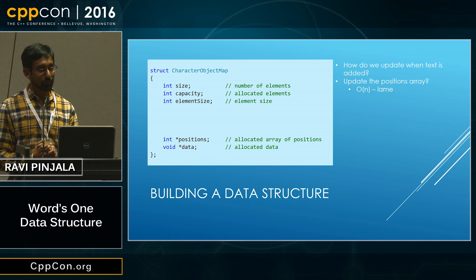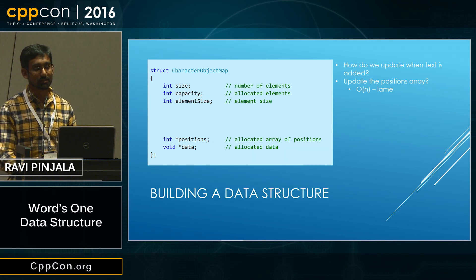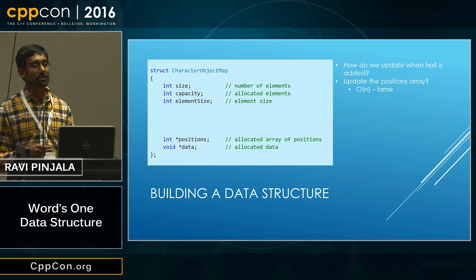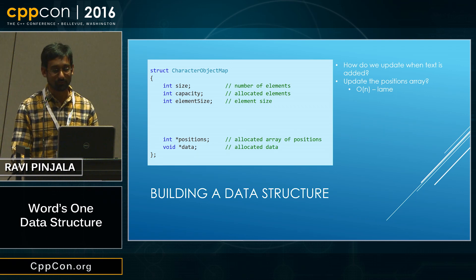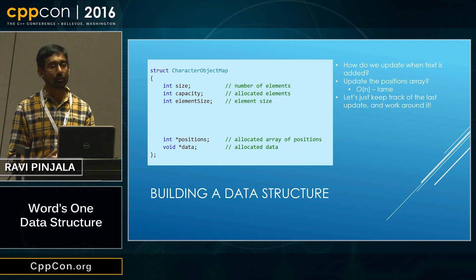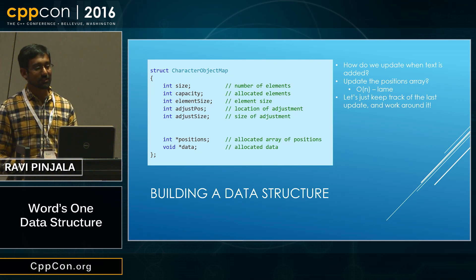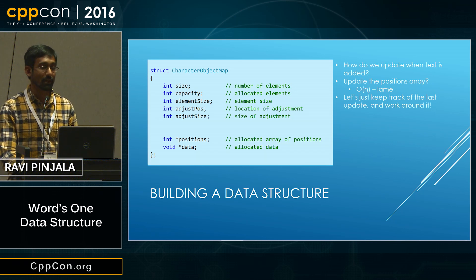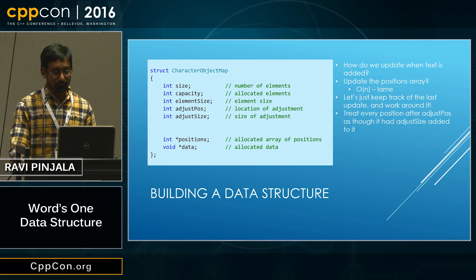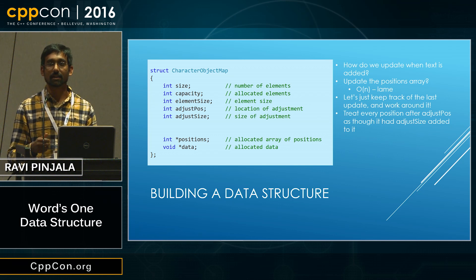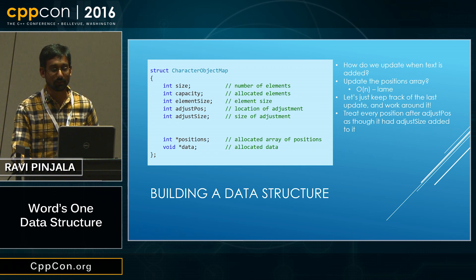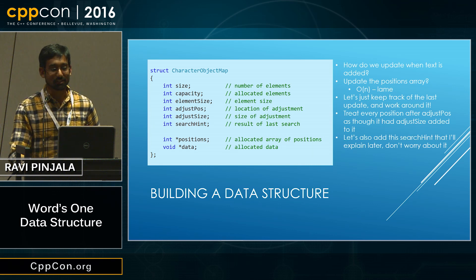So how do we update this when we actually add text to the document? We could go through the array of positions and just increment all of those — that's O(n), that's lame, we don't want to do that. So instead, let's just keep track of where the last update was and how big that update was and just sort of work around it. We keep track of the index of the last adjustment we made and the distance that we adjusted things. Let's also add this search hint here — I'll explain it later.